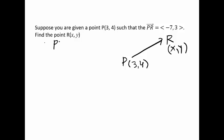...x minus 3, y minus 4. But we are given PR vector is <-7, 3>.